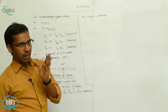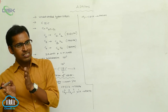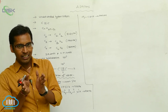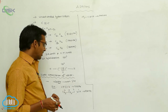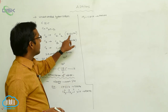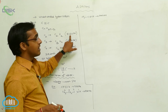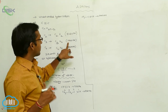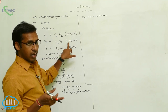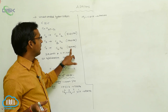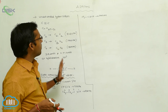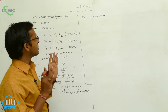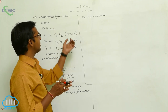In the IUPAC naming of alkynes, the names are similar to alkanes with 'ane' replaced by 'yne'. The common name of ethyne is acetylene. Propyne's common name is methyl acetylene. Butyne's common name is ethyl acetylene. The first member of alkyne is ethyne, with the formula C2H2.